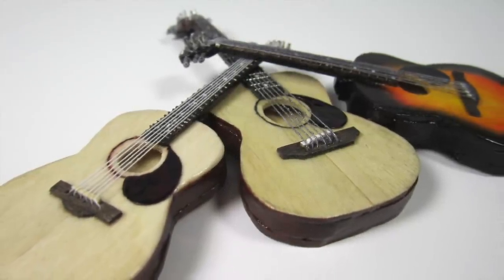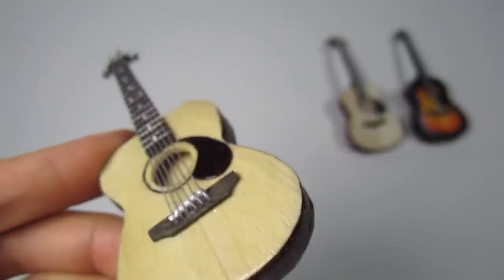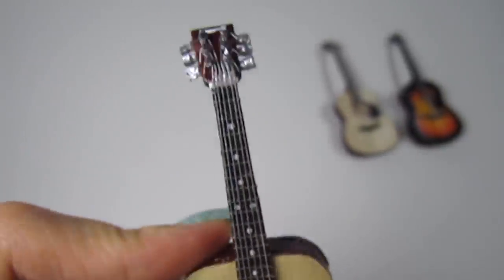They're made up of mainly popsicle sticks, so this is a project anyone can do. I'm showing you how to make them in 1:12 scale standard dollhouse size, but you can use the exact same steps and adjust the size to your liking. Now this is a pretty in-depth video, so let's not waste time and jump right into it.